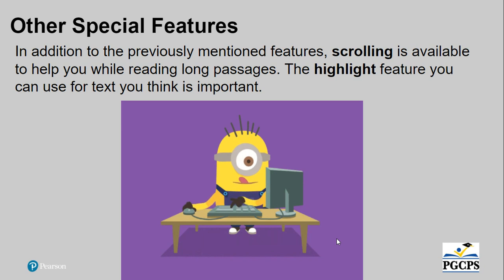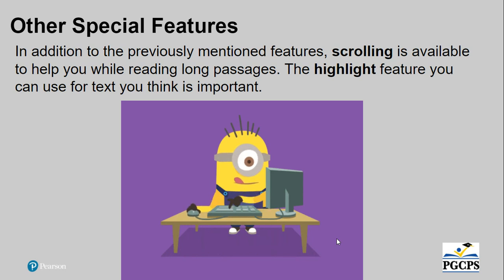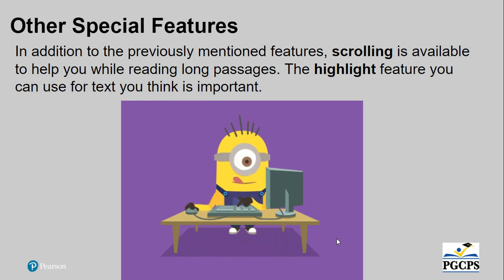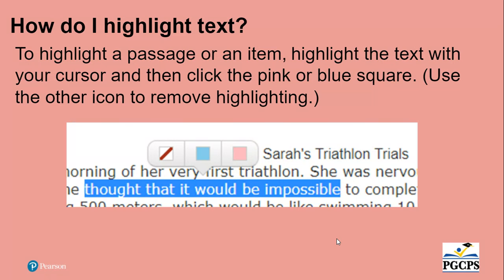Other special features include scrolling and highlighting. Scrolling is available to help you while reading those long passages, and the highlight feature you can use for text that you think is important and can help you answer questions. To highlight a passage or an item, highlight the text with your cursor and then click the pink or blue square. Use the other icon to remove highlighting.